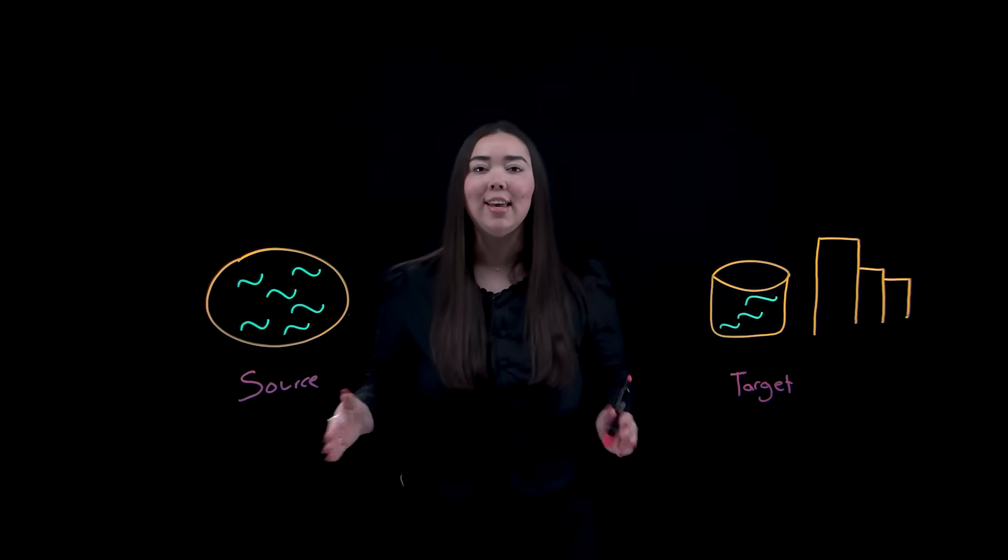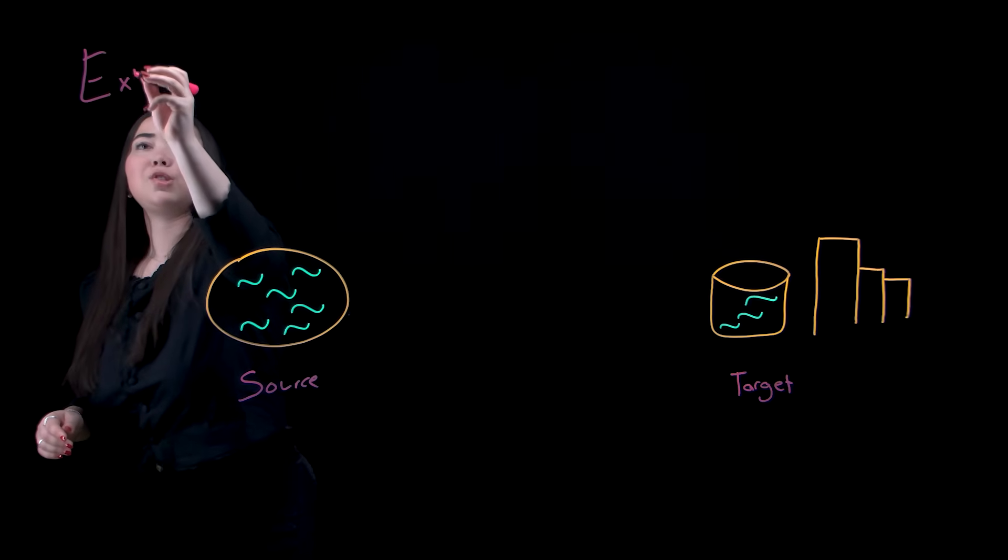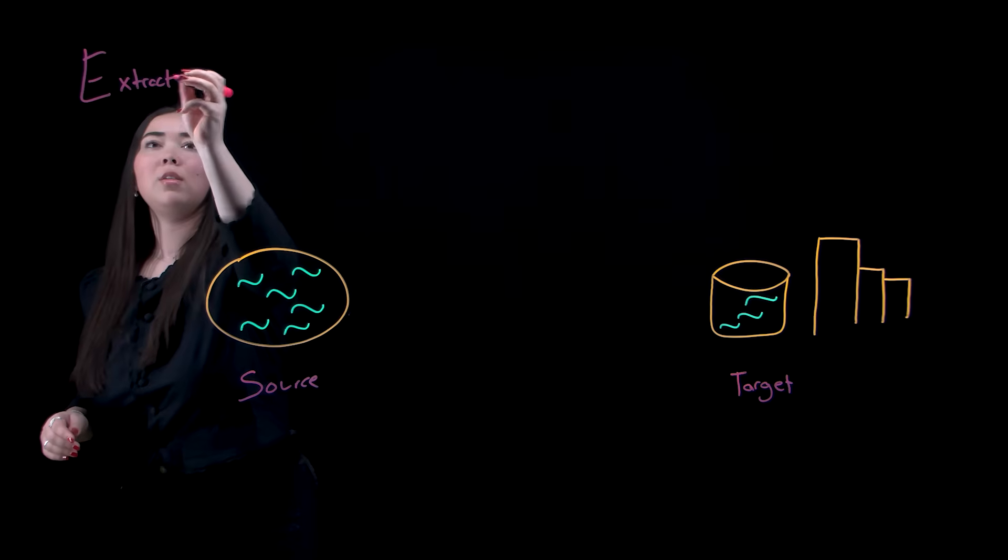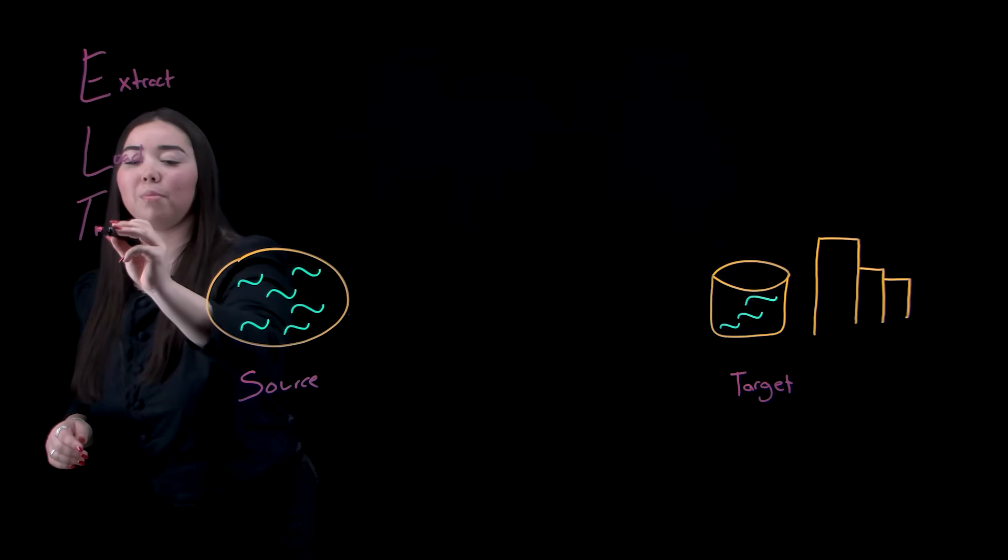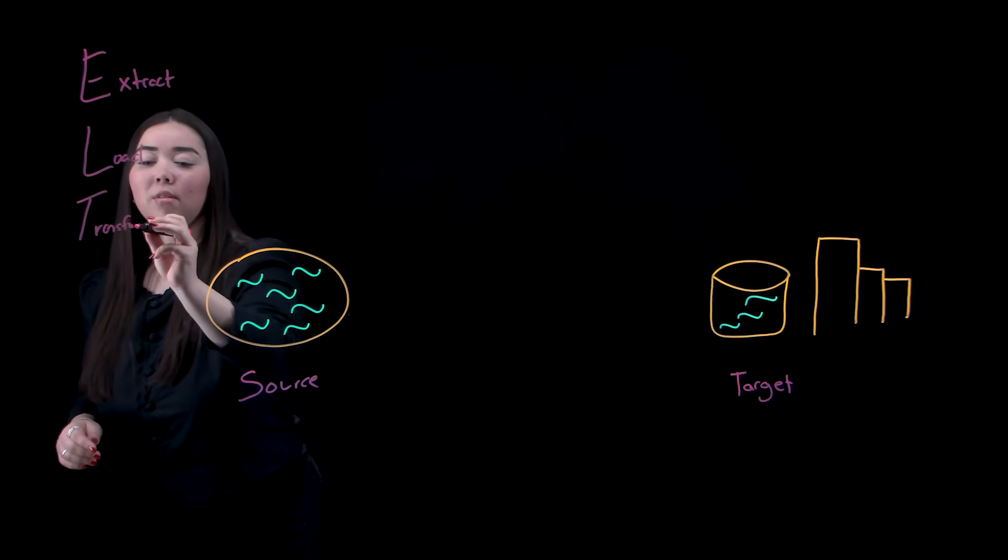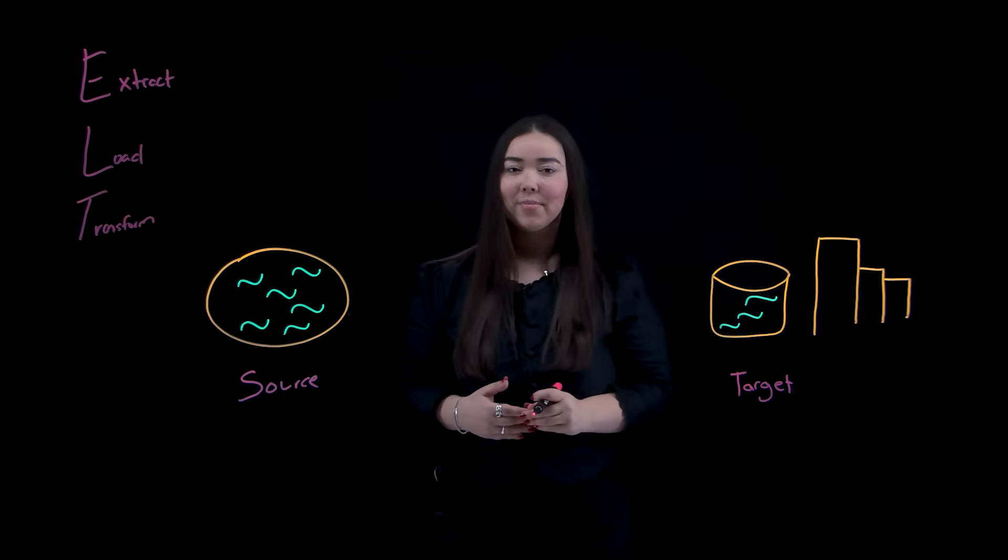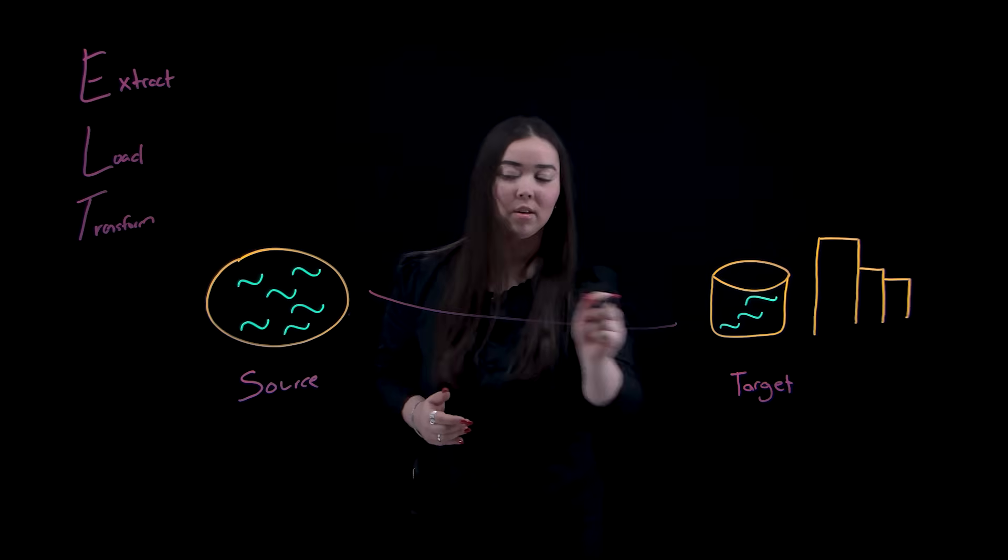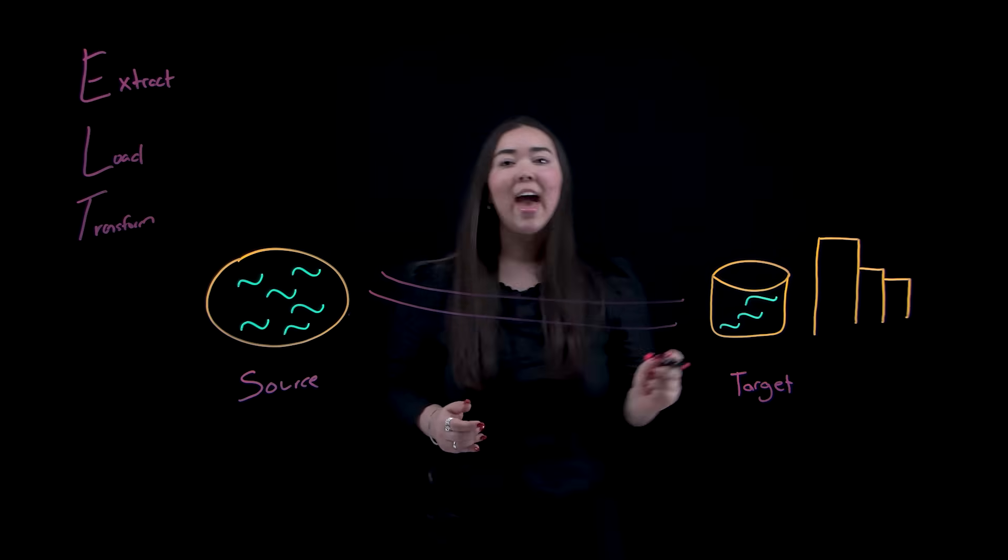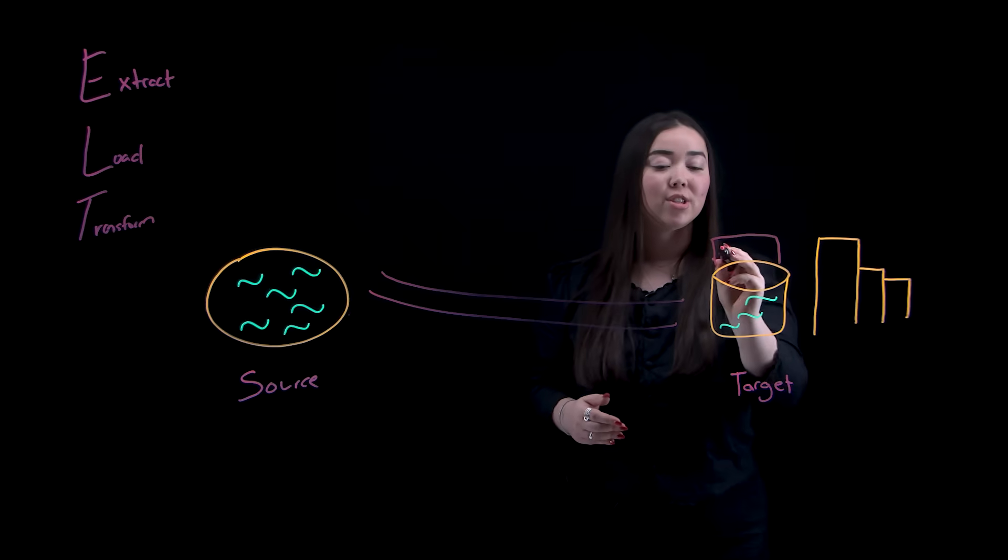Now, let's look at ELT. Here, we extract, load, and then transform. This flips the traditional model of ETL. Here, you pipe the raw water directly into the reservoir, and then treat it inside the reservoir using built-in filtration systems.